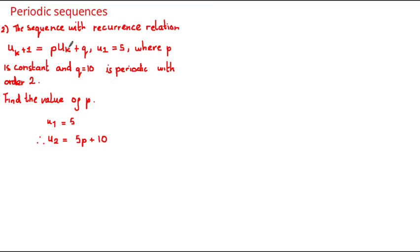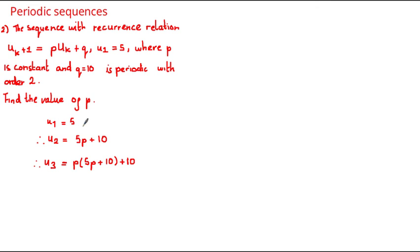We substitute u sub 1, which is 5, giving us 5 multiplied by p, and we get the 10 because q is equal to 10. To get the next term u sub 3, we need to substitute k equal to 2 into this formula, and therefore u sub 3 is equal to p multiplied by u sub 2, which we've just found an expression for as 5p plus 10, plus q which we know is equal to 10. Expanding the brackets we get that this is equal to 5p squared plus 10p plus 10.